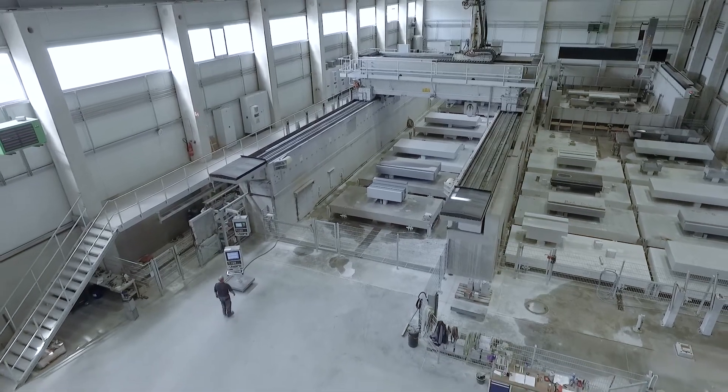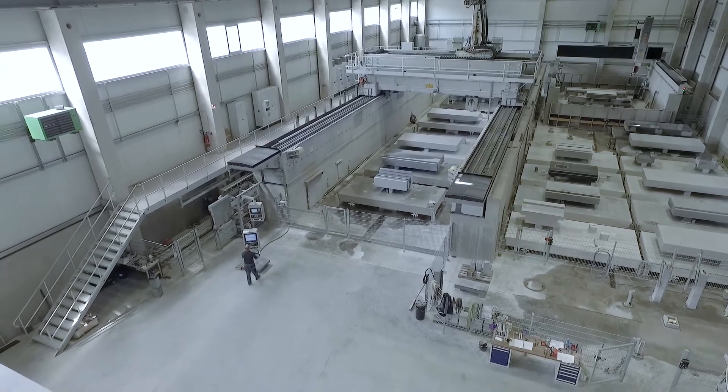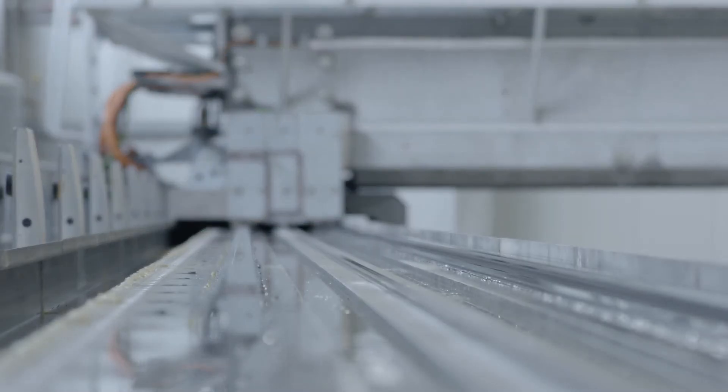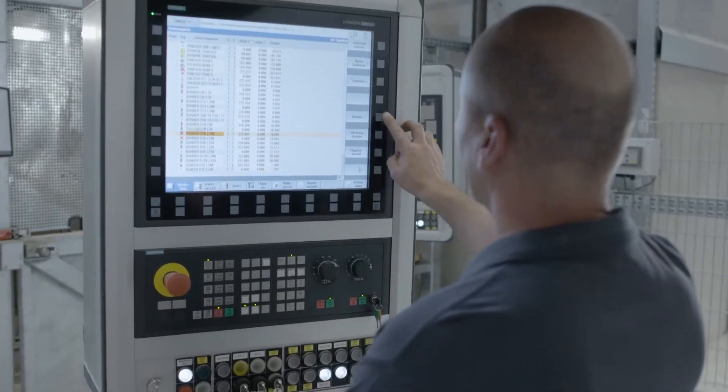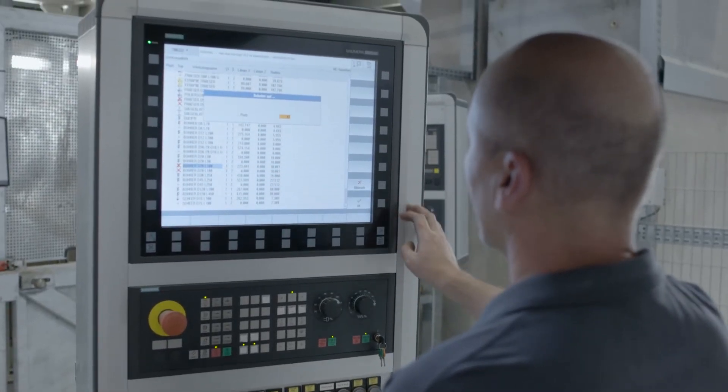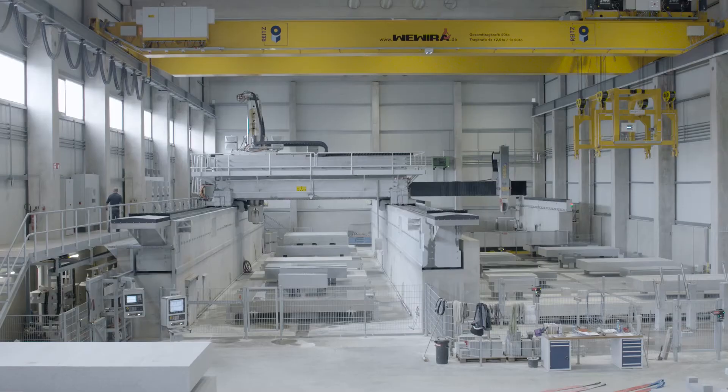The heart of our new production line is the 28 by 5 machine. We have a 32 meter travel path and can machine huge work pieces on five sides. This complete system is integrated into a connected Industry 4.0 chain.